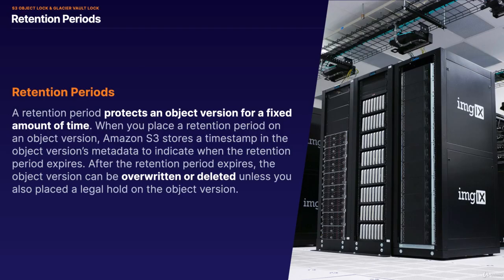A Retention Period is basically a period that protects an object version for a fixed amount of time — it might be a week, a month, a year, etc. When you place a retention period on an object version, S3 stores a timestamp in the object's version metadata to indicate when the retention period is going to expire. After the retention period expires, the object version can then be overwritten or deleted by the user, unless you've also placed a legal hold on the object's version.